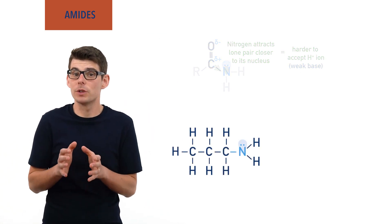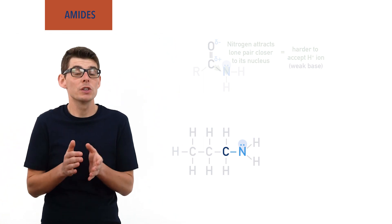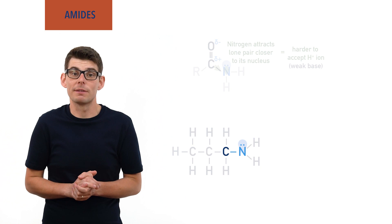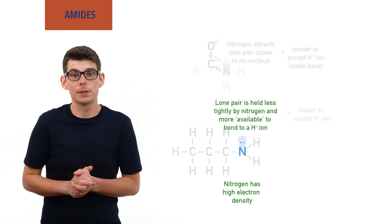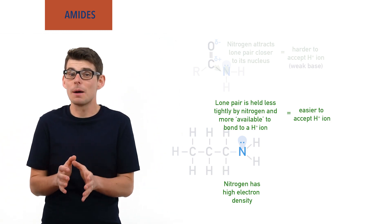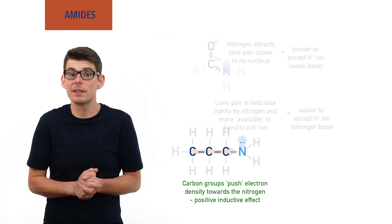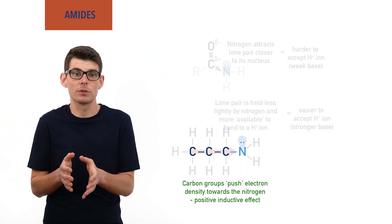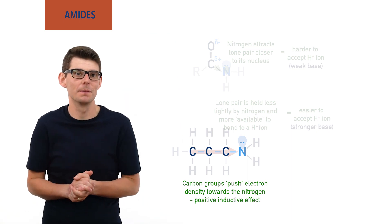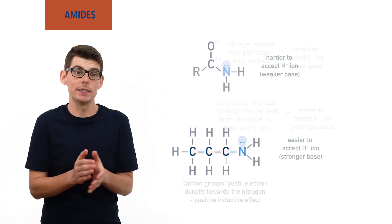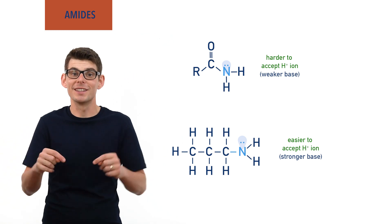In an amine, however, the carbon atom the nitrogen is bonded to has nothing else pulling electron density away from it, meaning the nitrogen is better able to attract electrons towards itself. This increases the electron density around the nitrogen atom and increases the availability of its lone pair of electrons, making it easier for an H+ ion to bond to it. The carbon group in an amine even helps push electron density towards the nitrogen in what is called the positive inductive effect. This not only increases the availability of the lone pair of electrons on the nitrogen, but also helps stabilize the positive ion formed when the nitrogen accepts an H+ ion, meaning the amine is able to hold on to the H+ ion. All of this makes amines much stronger bases than amides. The basicity of amines and the positive inductive effect has been covered in more detail in a separate video.